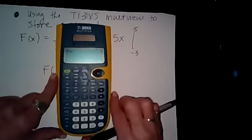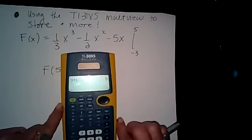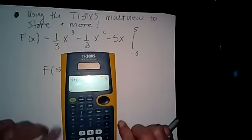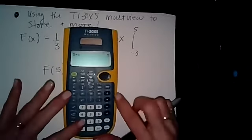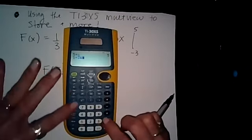Okay, and now I'm going to type in my anti-derivative. All right, so it's 1/3 X cubed. So I'm going to type 1 divided by 3, X to the third.